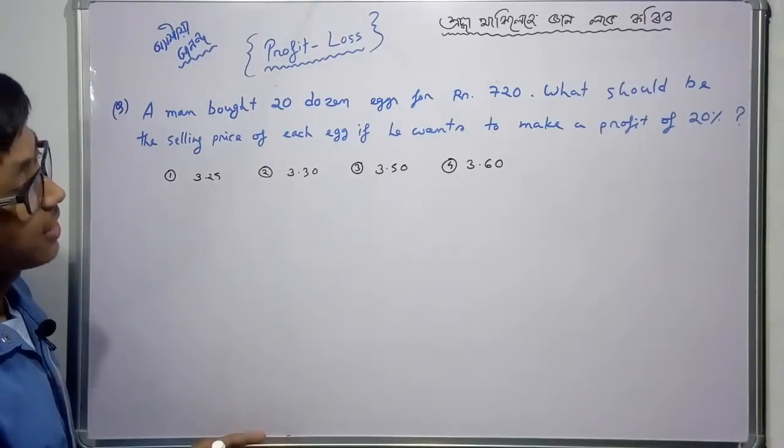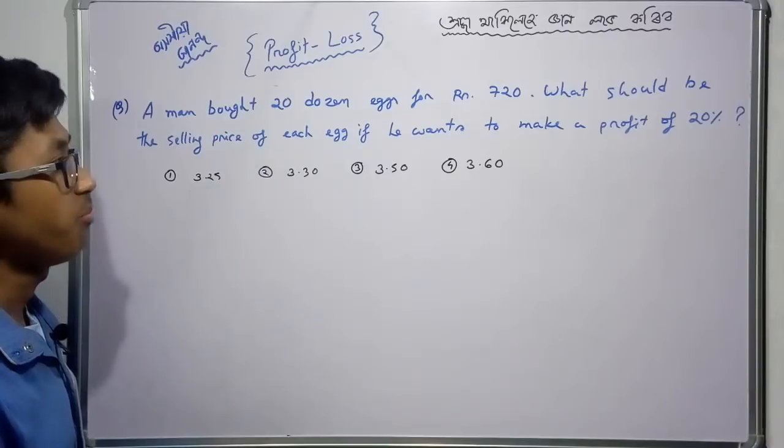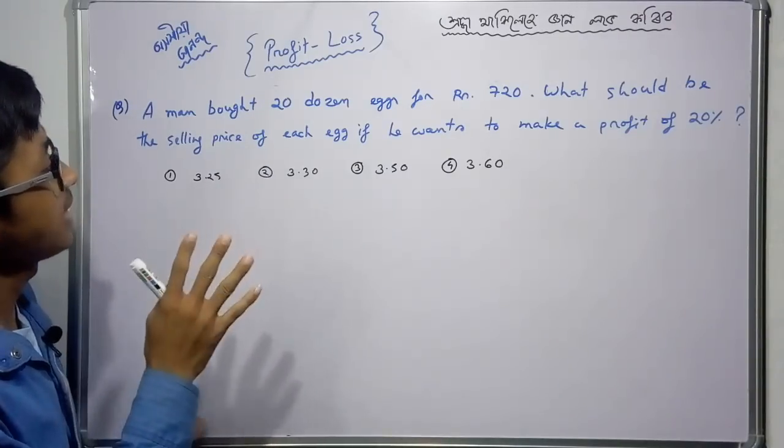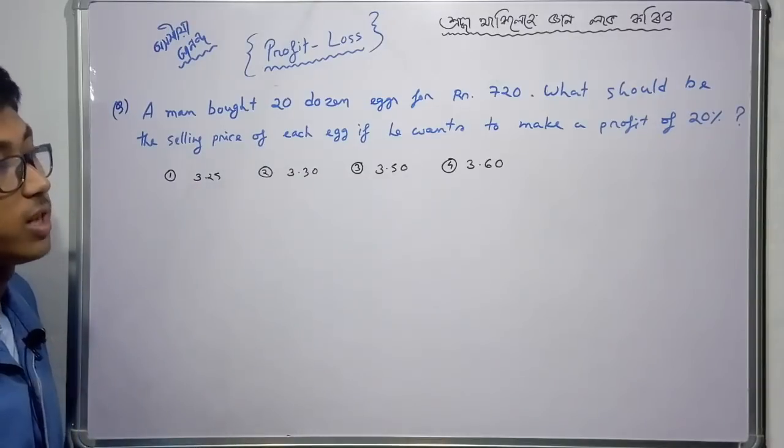A man bought 20 dozen eggs for Rs. 720. What should be the selling price of each egg if he wants to make a profit of 20%?